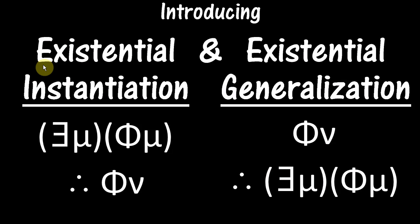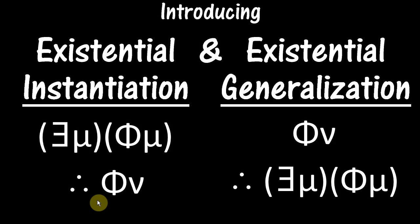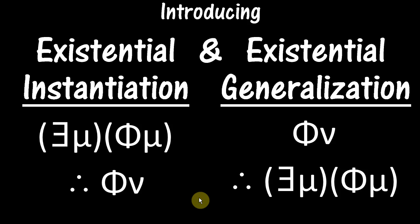In this video, we're going to look at existential instantiation and existential generalization. These are two rules of inference for predicate logic. Existential instantiation lets us go from an existential statement to a particular statement, and existential generalization lets us go from a particular statement to an existential statement. We'll also learn a restriction on one of these rules.